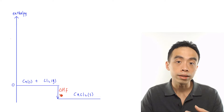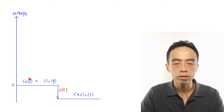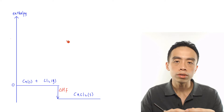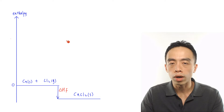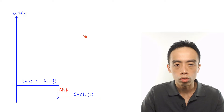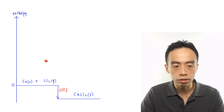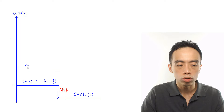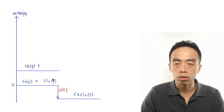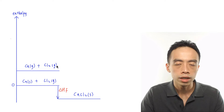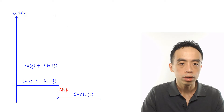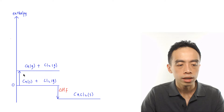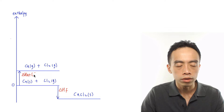Next we want to atomize the elements — first the metal, then the non-metal. Atomization is always endothermic because we need to supply energy to break bonds to form individual gaseous atoms. So we do the atomization of the metal first. This gives us calcium gas, with the non-metal Cl₂ left unchanged for now. I'll draw an arrow pointing up for this endothermic process — this is the atomization of calcium.